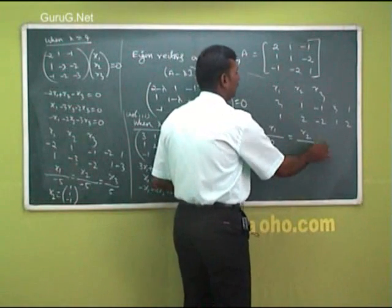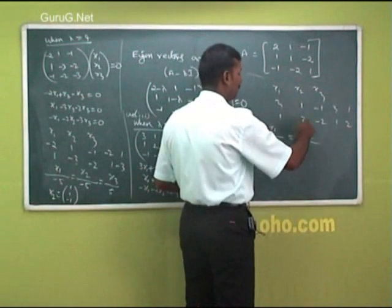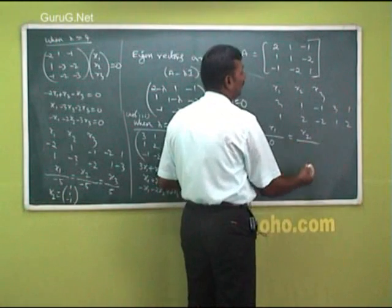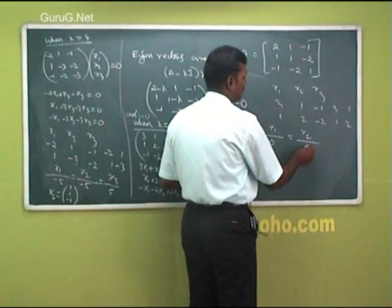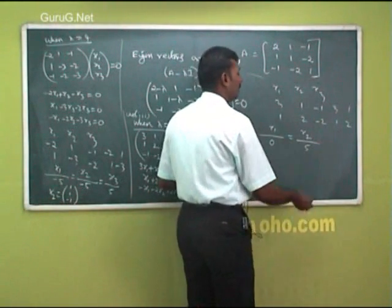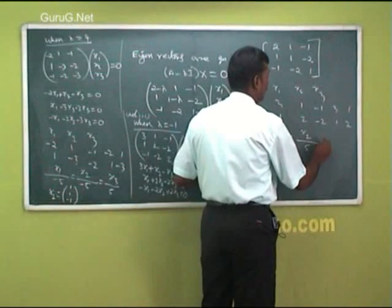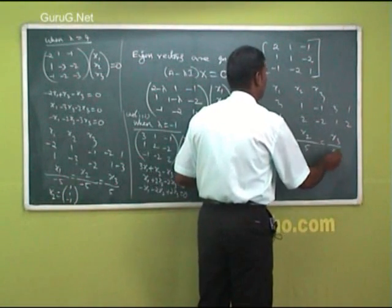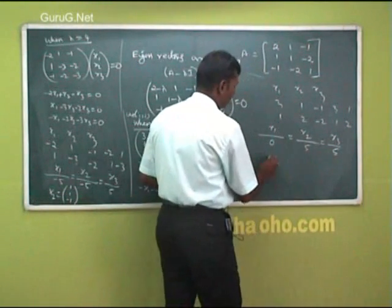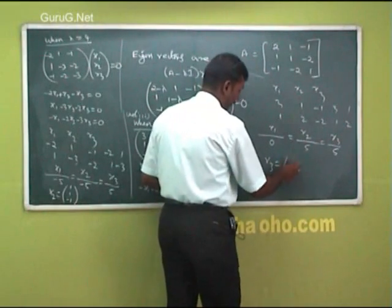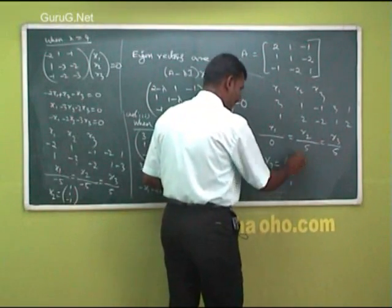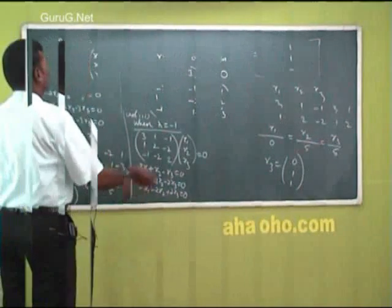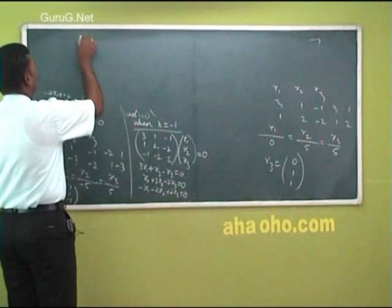Taking the first two equations: x1 by |1, -1; 2, -2| = x2 by |-1, 3; -2, 1| = x3 by |3, 1; 1, 2|. Simplifying: x2 by (-1 + 6) = x3 by (6 - 1). Therefore the third eigenvector is [0, 1, 1].